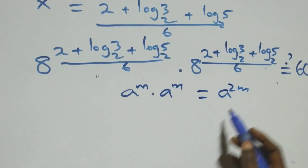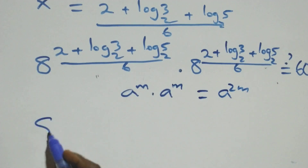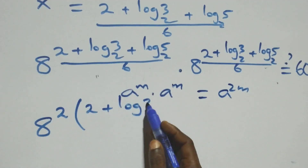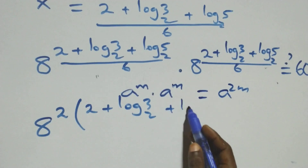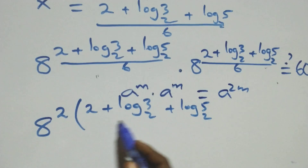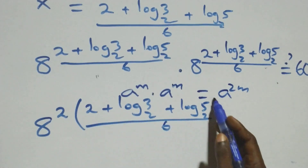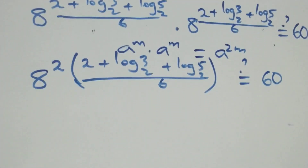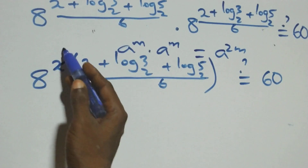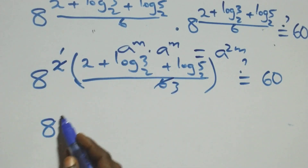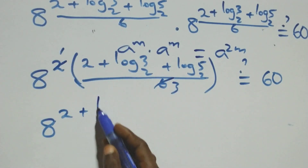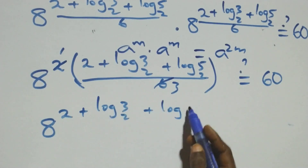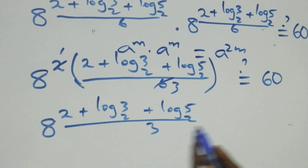So we can write it as 8 raised to power 2 times (2 plus log 3 base 2 plus log 5 base 2) over 6. The 2 and 6 simplify, giving 8 raised to power (2 plus log 3 base 2 plus log 5 base 2) over 3, equal to 60. Rewriting 8 as 2 cubed, this becomes 2 cubed raised to power (2 plus log 3 base 2 plus log 5 base 2) over 3, equal to 60.